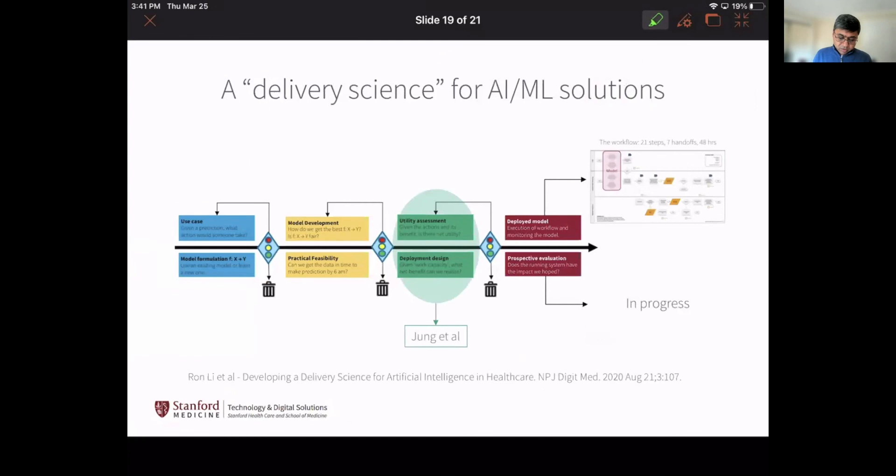That's basically the walkthrough through this framework. What I walked you through is this particular paper about assessing utility and designing deployment. This thing is now deployed, and Ron Lee is doing the prospective evaluation to see if by enabling this ML-triggered advanced care planning workflow, we're changing the rates of advanced care planning, which is what we truly want to do. That's the walkthrough to the paper. I have one more slide or we can go straight to questions.